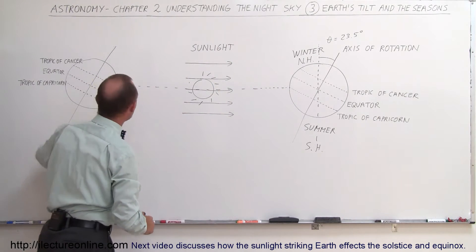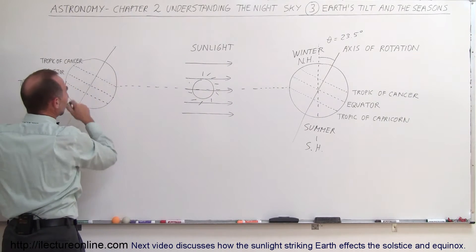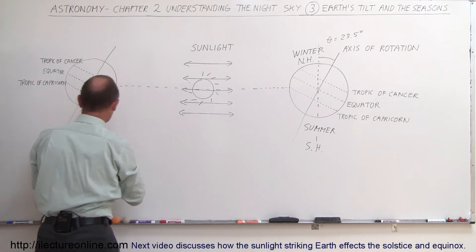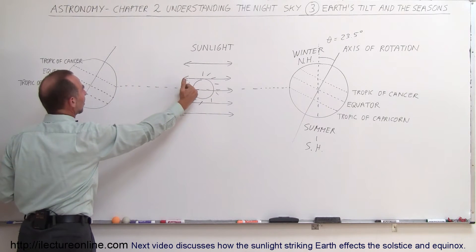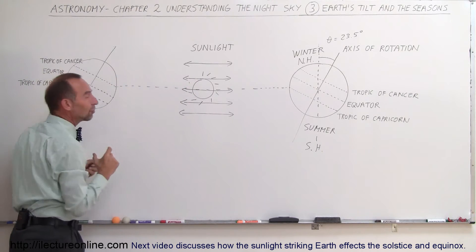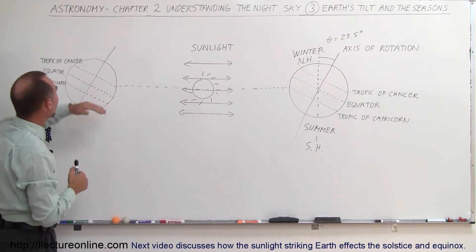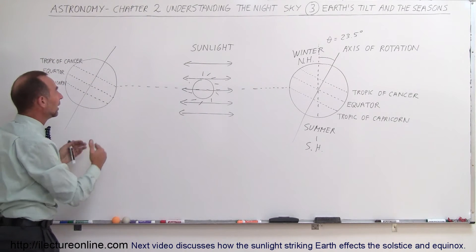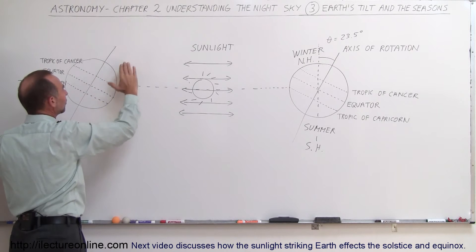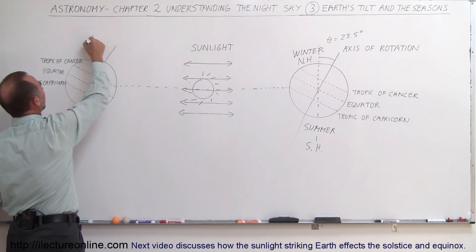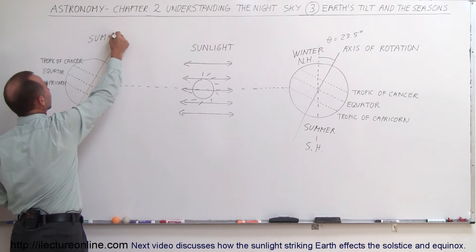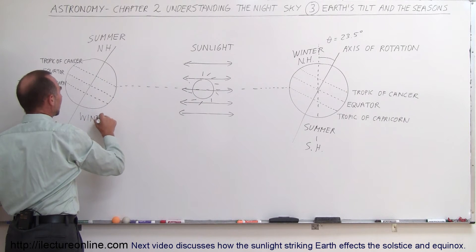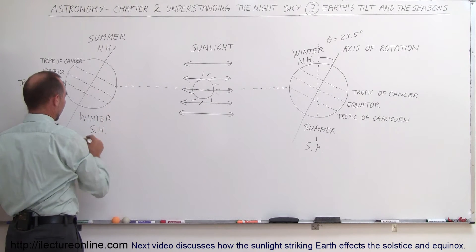But six months later, what happens is the Earth will keep the same tilt, but now it's on the other side of the sun, and the sun rays will go in all directions, will be shining in this direction as well. Now notice that the sunlight will hit a point on the Earth 23.5 degrees directly north of the equator, and that would then be called the Tropic of Cancer. That will happen on around June the 21st, the first day of summer, and that's when we have the longest days in the Northern Hemisphere, so now we have summer in the Northern Hemisphere and we have winter in the Southern Hemisphere.